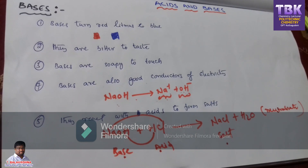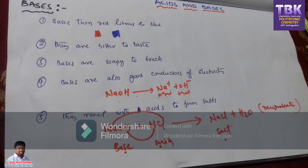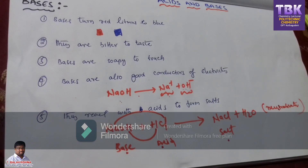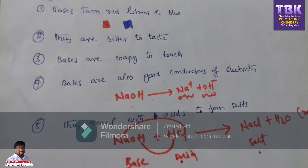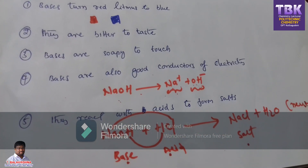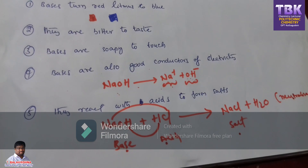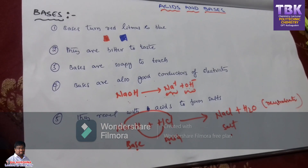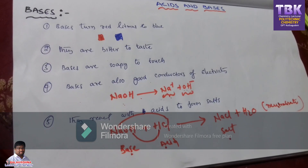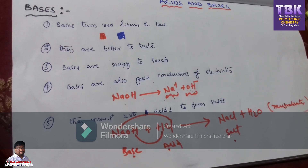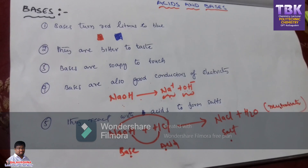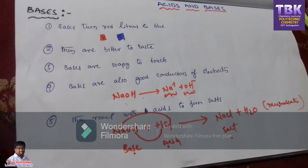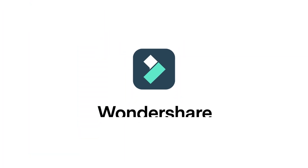These are the properties of bases: they turn red litmus to blue litmus, they are bitter to taste, they are soapy to touch, they act as good electricity conductors, and bases react with acids to produce salt. Thank you, students. This is T. Balakrishna, chemistry lecturer, GPT Kottaguram.